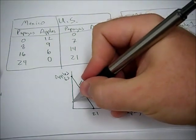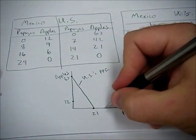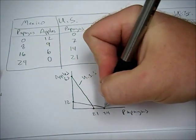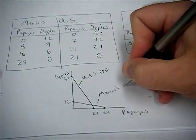Now for Mexico, the maximum amount of apples they can produce in a day is 12. The maximum amount of papayas is 24. We can connect those lines and that gives us Mexico's PPF.